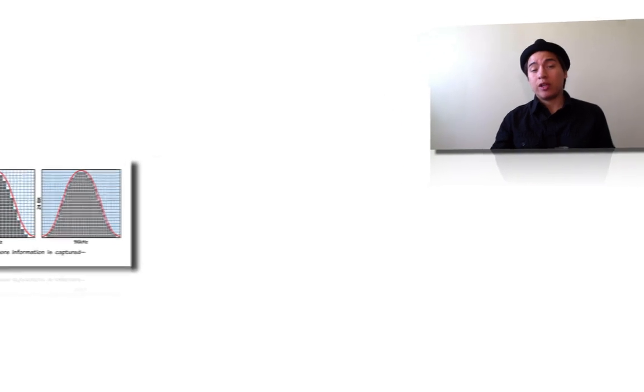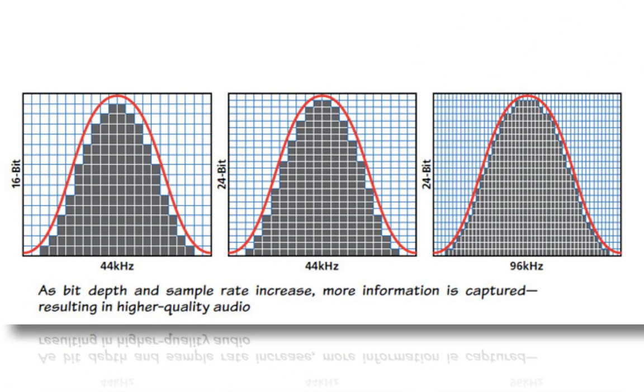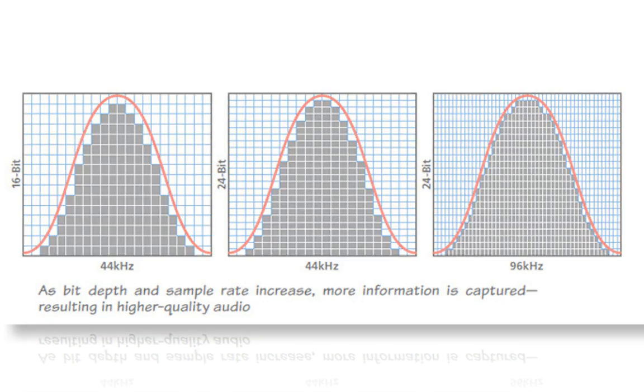As bit depth and sample rate increase, more information is captured, resulting in higher quality audio. Right here, we're going to look at these black boxes. The black boxes within this chart represent bit depth. The red curve represents the amount of time or frequency that the audio is captured at.